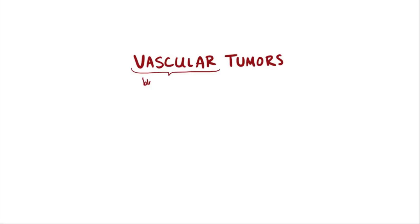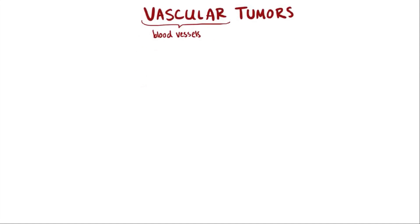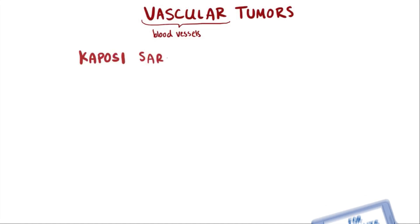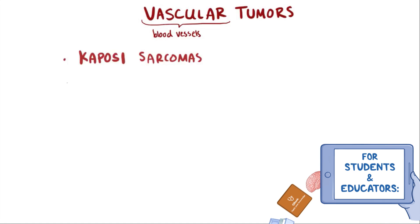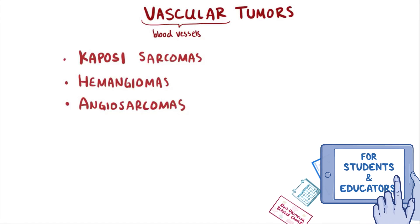Vascular tumors are tumors of the blood vessels, and there are actually a lot of different types. This is just a quick overview of three types of tumors: Kaposi sarcoma, hemangiomas, and angiosarcomas.